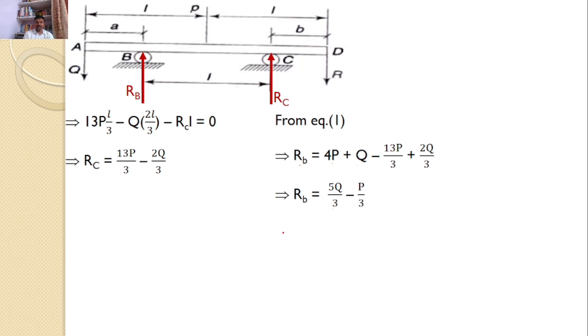In the given problem, we want the bar AD to be in equilibrium by itself. Hence, these two reactions are not required to keep the body in equilibrium.